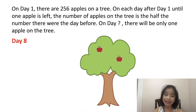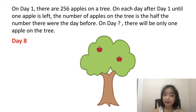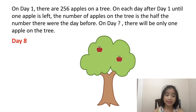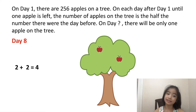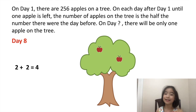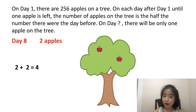Now let's figure out how many apples there are on day eight. We know that on day seven there are four apples. So on day eight, there is half the number of apples on day seven, which is two, because two plus two equals four. So on day eight, there are two apples.